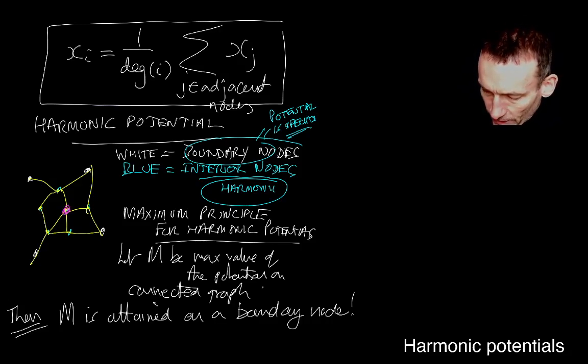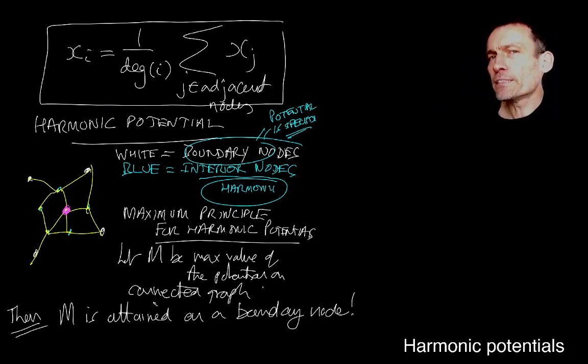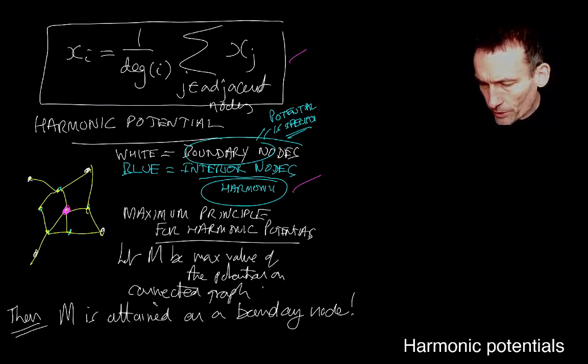So that's the supposition. Suppose that that pink node, which is also blue, it's an interior node, the maximum M is attained. So the potential there is M. Well, it's an interior node, which means it's harmonic, which means this holds, which means that the potential there, which is M, is the average of all of the potentials of its neighbours. Now in this particular picture, its neighbours are the crosses and they are also blue nodes. So they're also interior nodes.